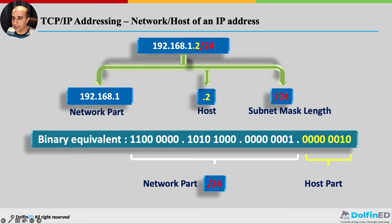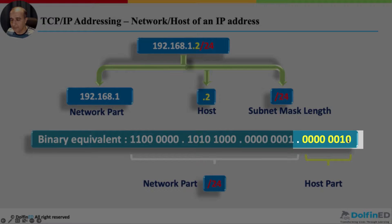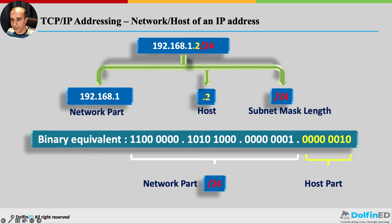What tells computers and networking devices which part is the network and which is the host? That's the subnet mask. The slash number — anywhere between 1 and 32 — signifies this. Its binary equivalent is a string of ones (network) followed by zeros (host). For example, with a slash 24 you have 24 ones for the network and 8 zeros for the host. If it is slash 16, then the left two octets are the network and the right two are the host.